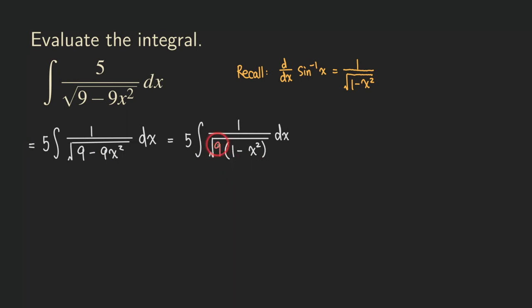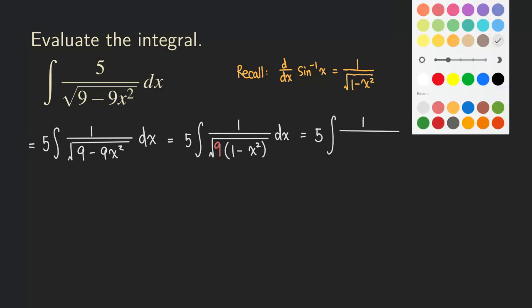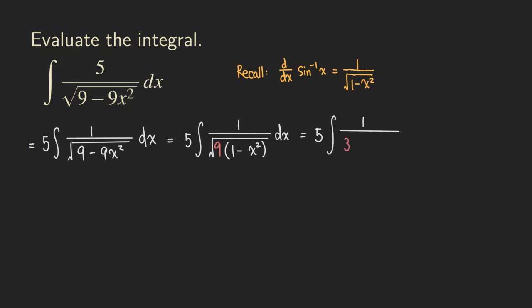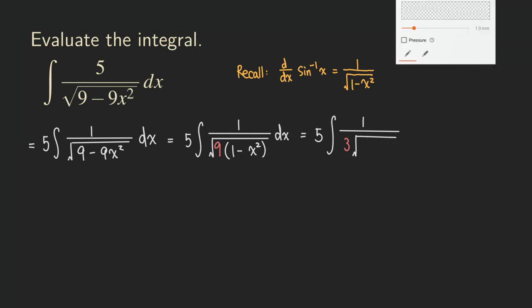From there we can take the 9 outside the square root by writing this denominator as the square root of 9, times the square root of 1 minus x squared. The square root of 9 will just come out. So we will be having 5 times the integral of 1, and the square root of 9 becomes a 3, and then we have the square root of 1 minus x squared.